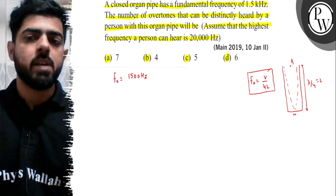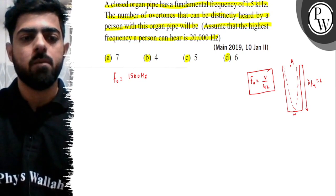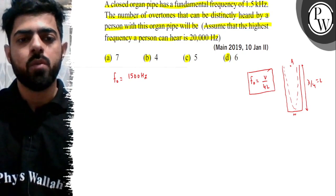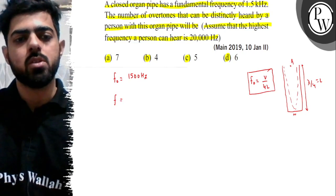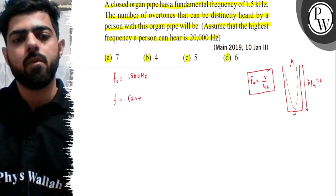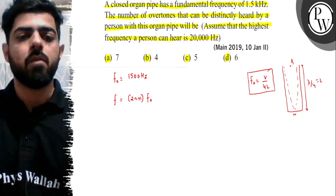Now, another important thing about closed pipes is the overtones frequencies. The overtones frequencies are odd multiples of the fundamental frequency.